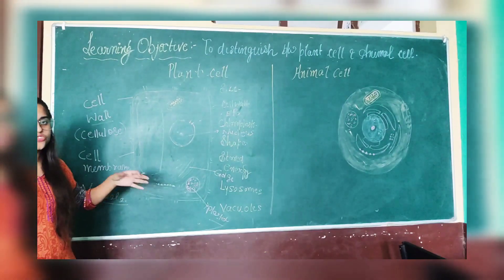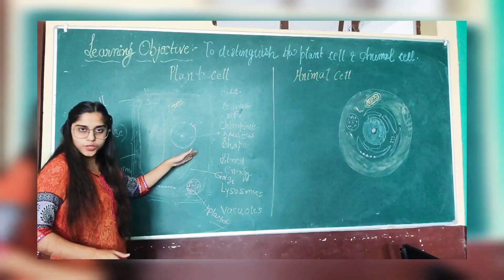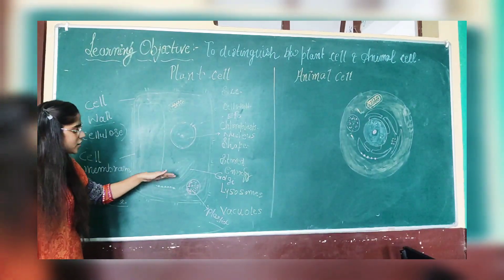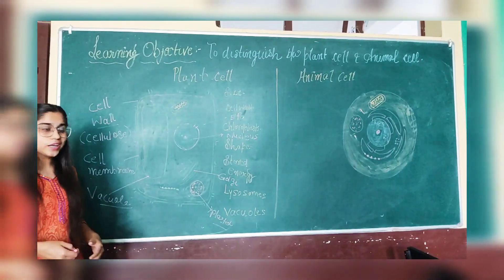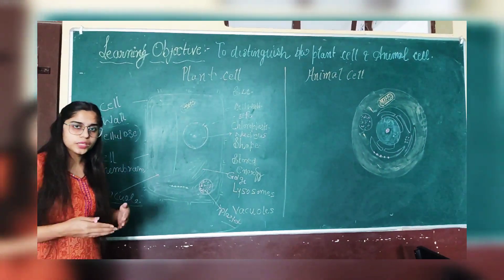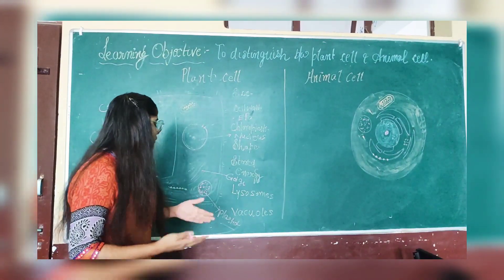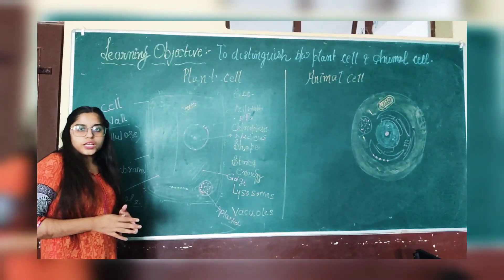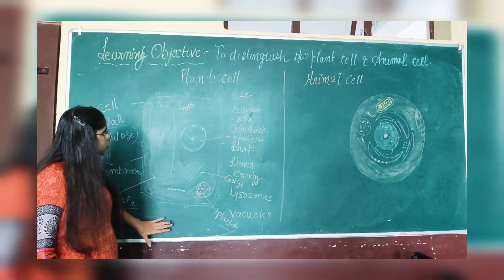This is the Golgi apparatus. The Golgi apparatus helps the plant cell to package the proteins which are being synthesized by the endoplasmic reticulum. These proteins are packaged by the Golgi apparatus and there are many functions performed by the Golgi apparatus, for example the formation of complex sugars from simple sugars.